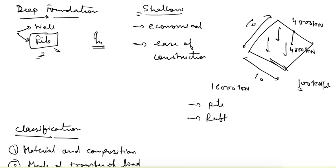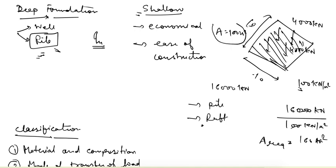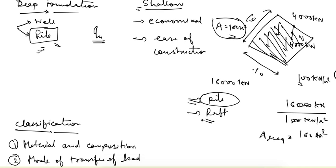Our first choice is to check for shallow foundation. The raft will be provided over the whole area. The total load to transfer is 16000 kN and the bearing capacity is 100 kN per meter square, so the area required for the raft is 160 meter square. But the area available in the field is only 100 meter square (10 by 10). So we cannot choose raft foundation here, and for this reason we have to choose pile foundation. This is the typical example of how we go for pile foundation.